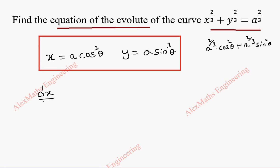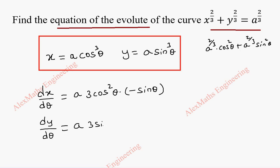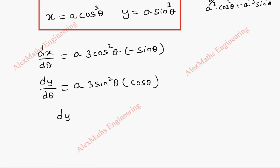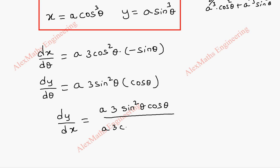Now from this we can get dx/dθ, which is A·3cos²θ·(−sinθ). Now dy/dθ will be A·3sin²θ·cosθ. We are going to divide this to get dy/dx. The numerator will be A·3sin²θ·cosθ, divided by A·3cos²θ·(−sinθ). We can cancel A and A, 3 and 3, sinθ and the square, cosθ and the square. Totally this is −tanθ.